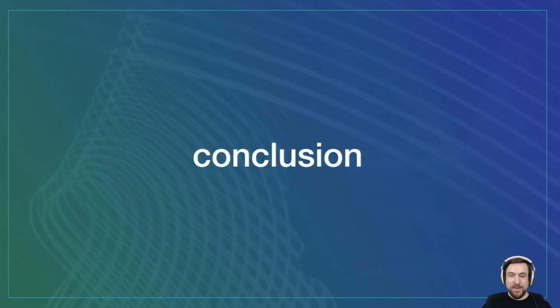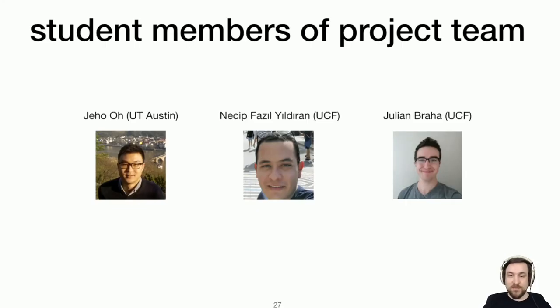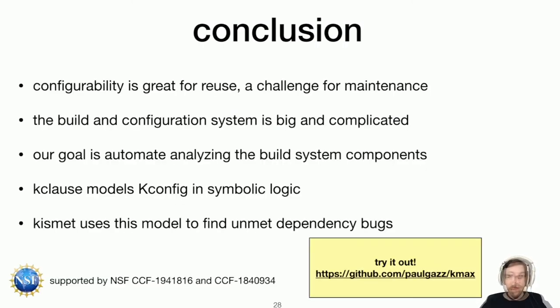Thank you, Najeeb, and that concludes our talk. I just want to give a shout out to all the students who worked on this, including Najeeb, and Jeho, and Julian, who helped get this stuff solid and evaluated. In conclusion, configurability of the kernel is a boon for reuse, but it's a challenge for maintenance. And building a configuration system that manages this configuration process is complicated. Our goal is to try to automate and analyzing these build system components so that we can provide useful automation and tooling for maintainers.